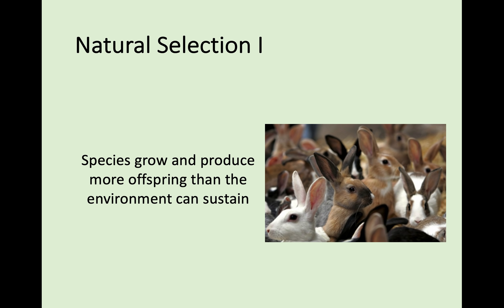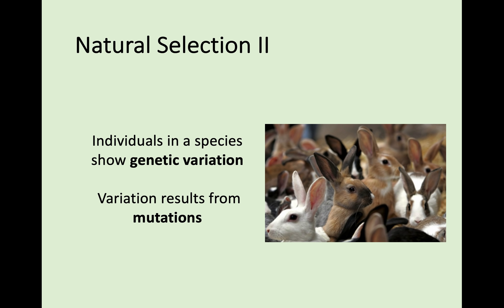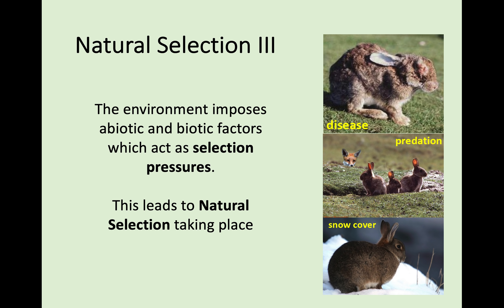Typically, a species will grow, produce lots of offspring, and eventually reach a stage where the environment can no longer sustain that amount of them. In this example we're looking at rabbits. Individuals in a species will show variation — they will look differently — and all this variation results from different mutations. The environment then has abiotic and biotic factors which act as selection pressures, such as disease, increased predation, or a change in environment like snow cover where fur colour becomes a disadvantage.